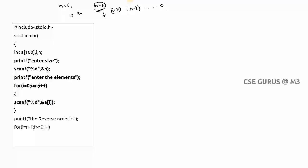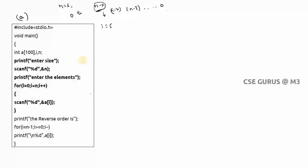The logic for reverse order printing: for(i = n-1; i >= 0; i--). If n equals 6, i starts at 5, printing a[5] first, then a[4], a[3], and so on down to a[0] — decrementing i each time. After this loop, if you print the array normally with i from 0, you still get the original array unchanged — that is the key point of printing in reverse order.